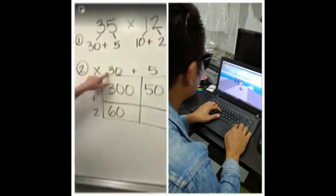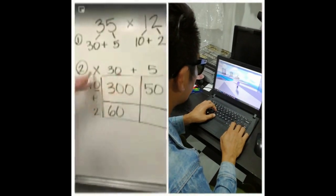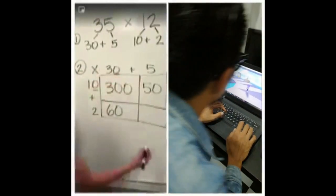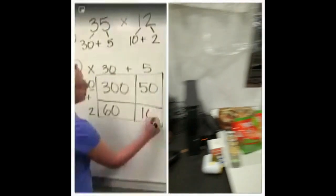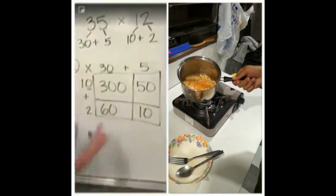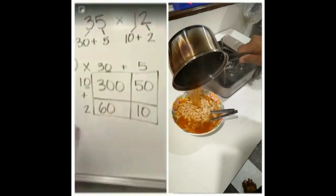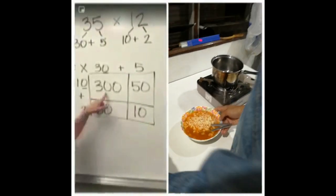2 times this, 2 times that. Now I'm going to do 2 times 5. 2 times 5 is 10. I filled up all my numbers on the inside, now all I have to do is add them up.